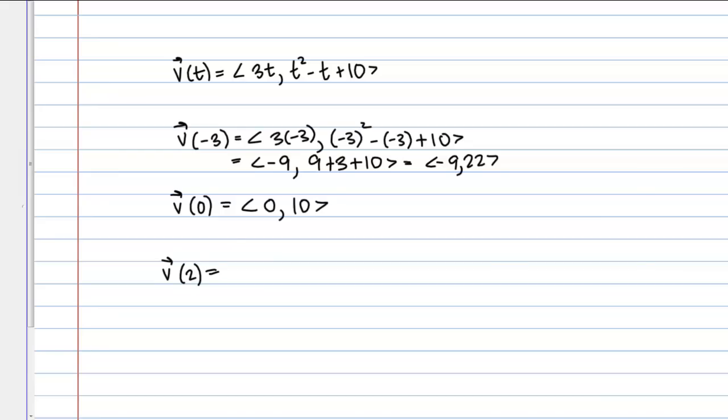And then finally what about V of 2? So if I plug in 2 to my vector valued function, I get 3 times 2 for the X component. And 2 squared minus 2 plus 10 for Y. So that's 6 for the X component and 4 minus 2 plus 10 for the Y component. So overall looks like 6 and 12.